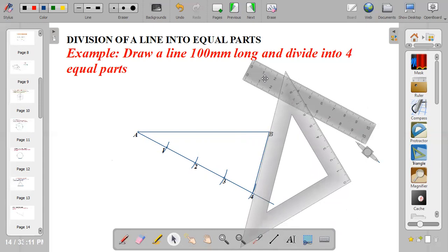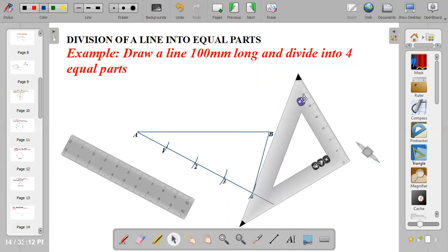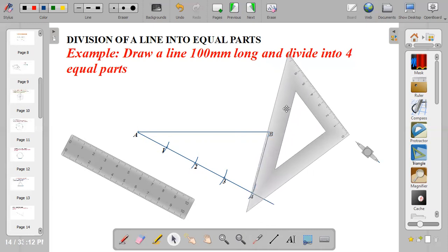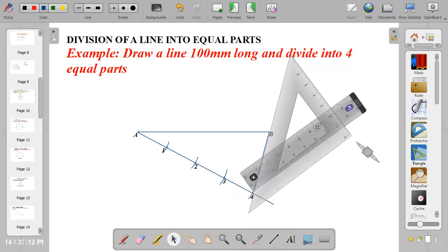Use your ruler to support it at the base of the set square. Place your ruler at the base of the set square and hold it firm to your paper.